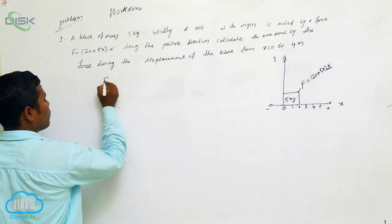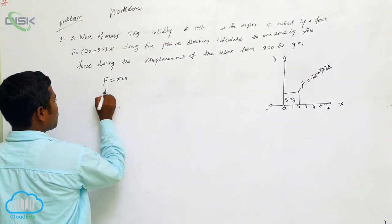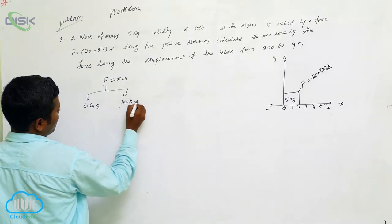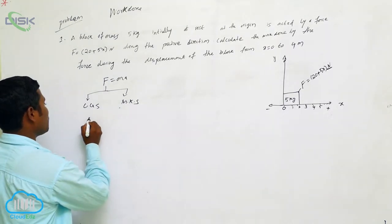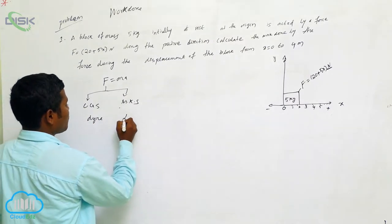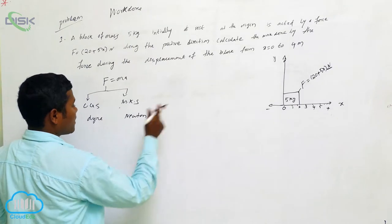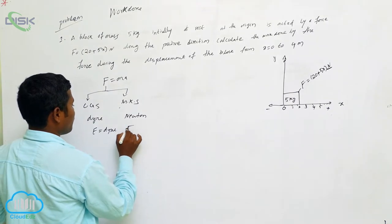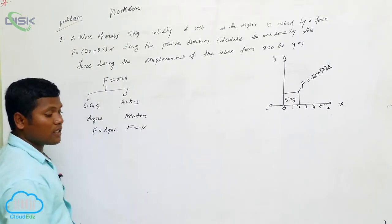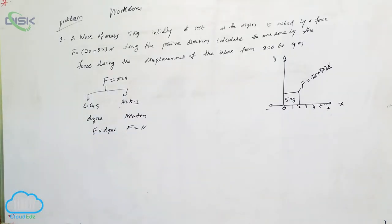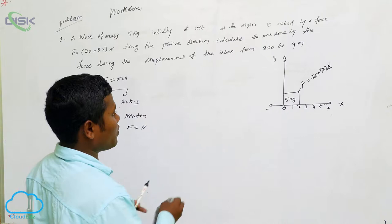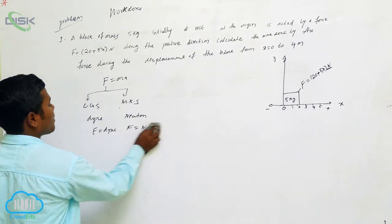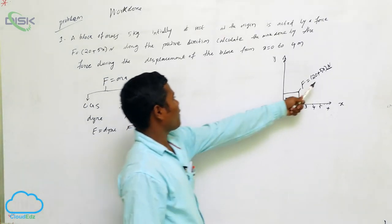Before going further, what is the formula for force? F = ma. There are two types of measurement systems: CGS and MKS. In CGS, the unit of force is dyne; in MKS, the unit is Newton (N). In this problem, the force is given as F = 20 + 5x Newtons, which is MKS measurement.